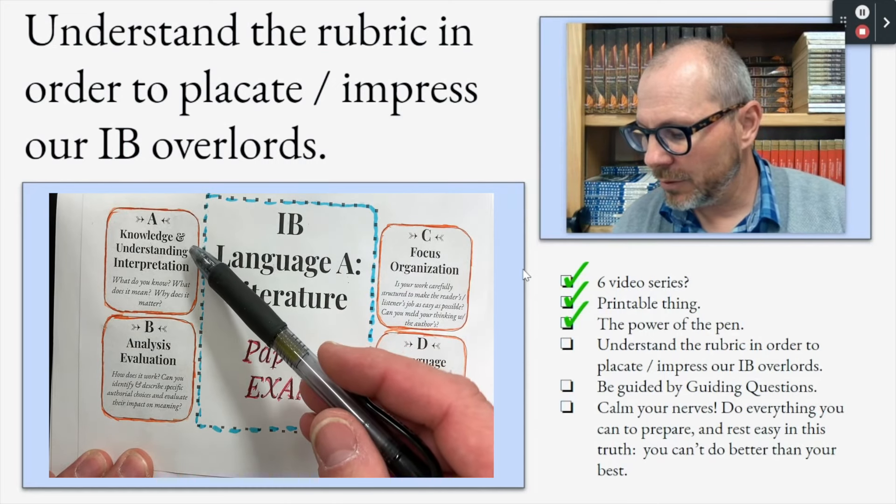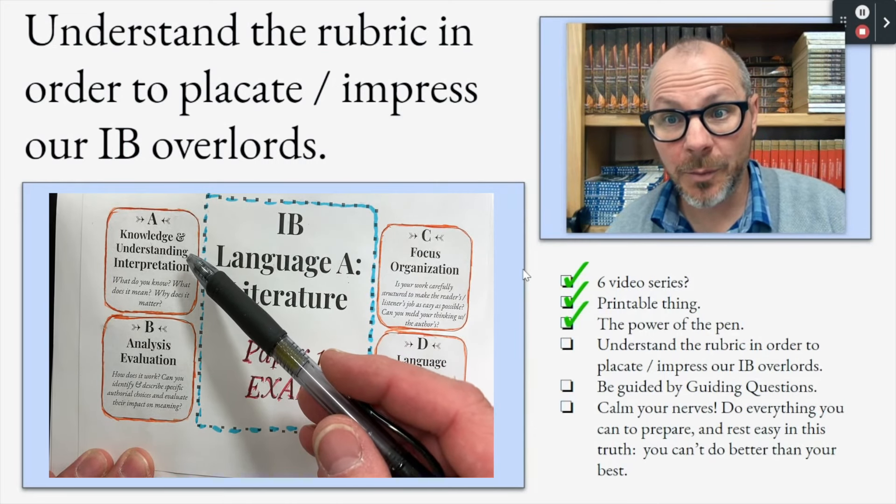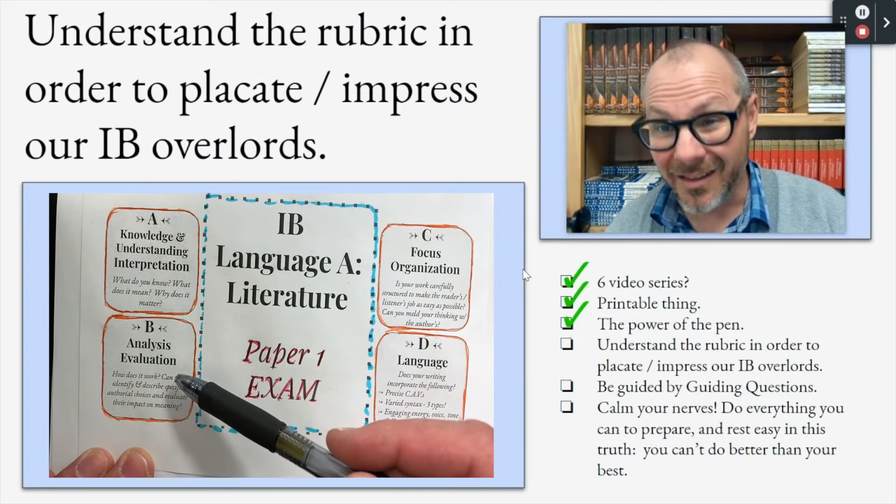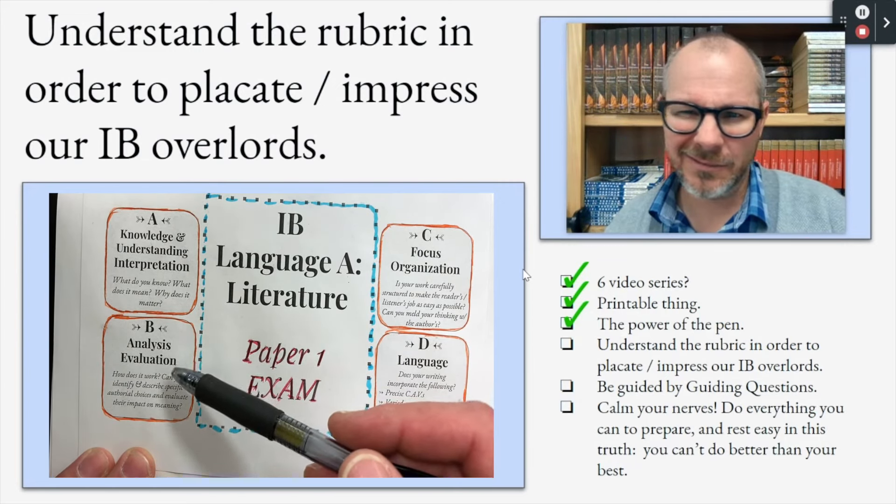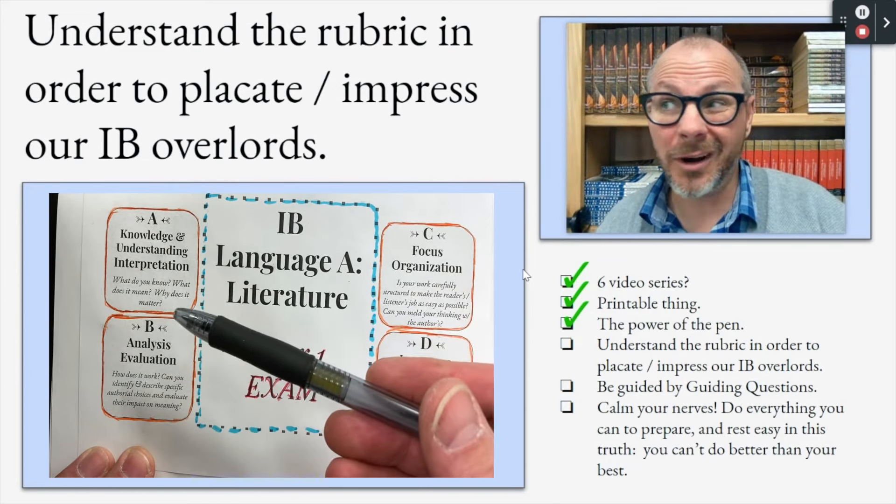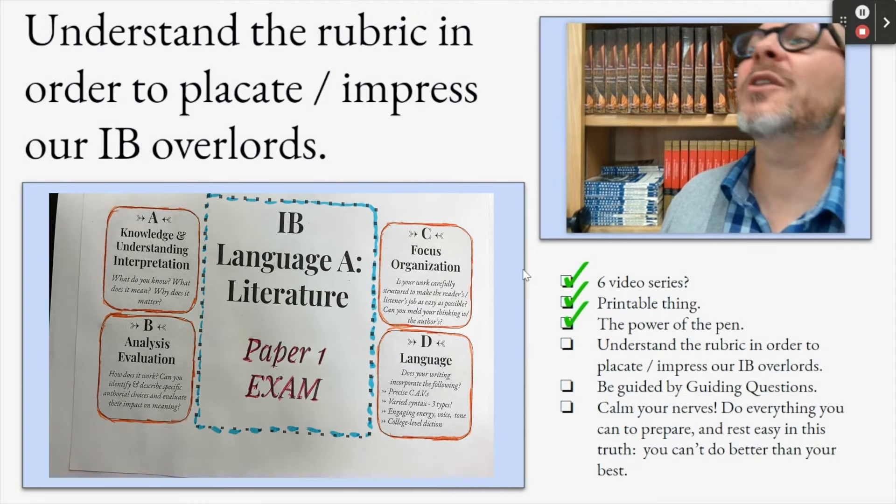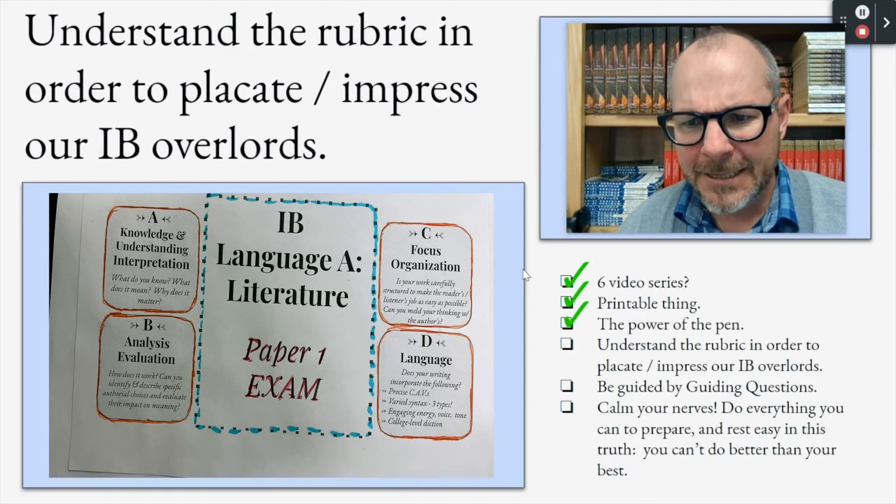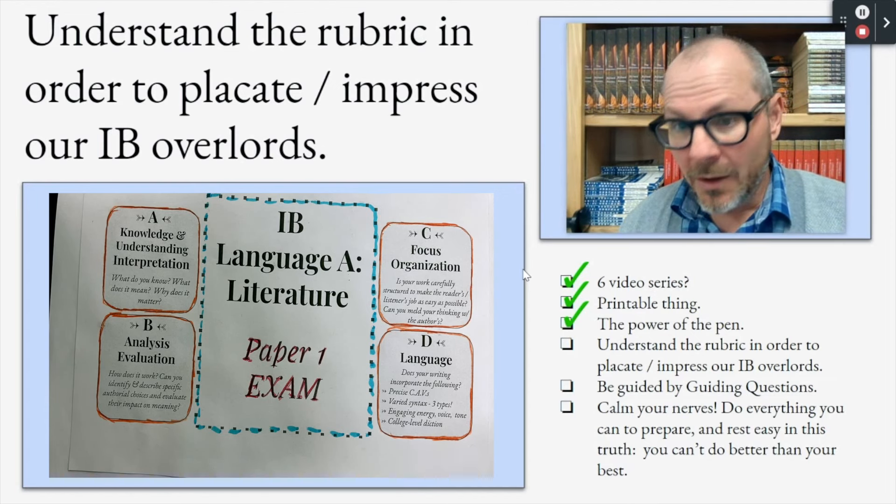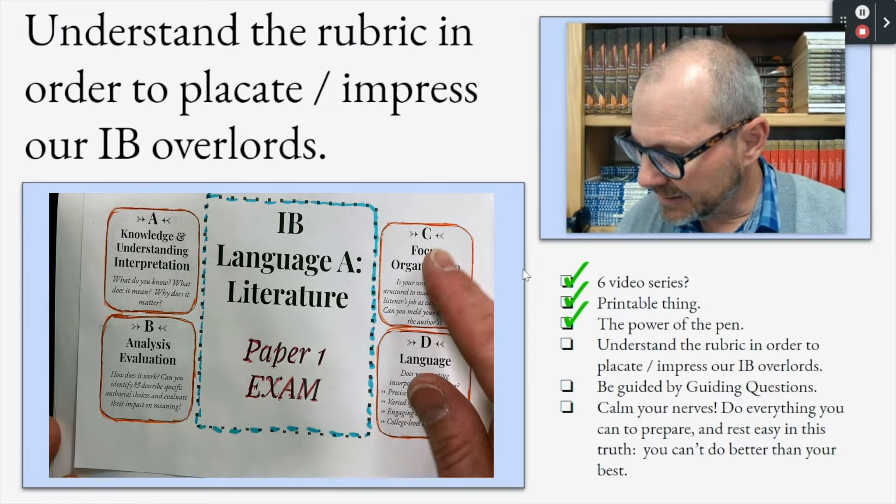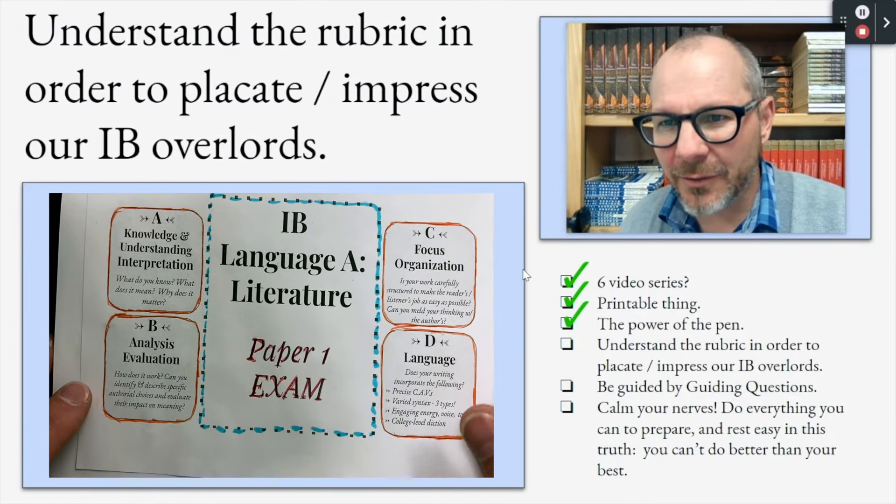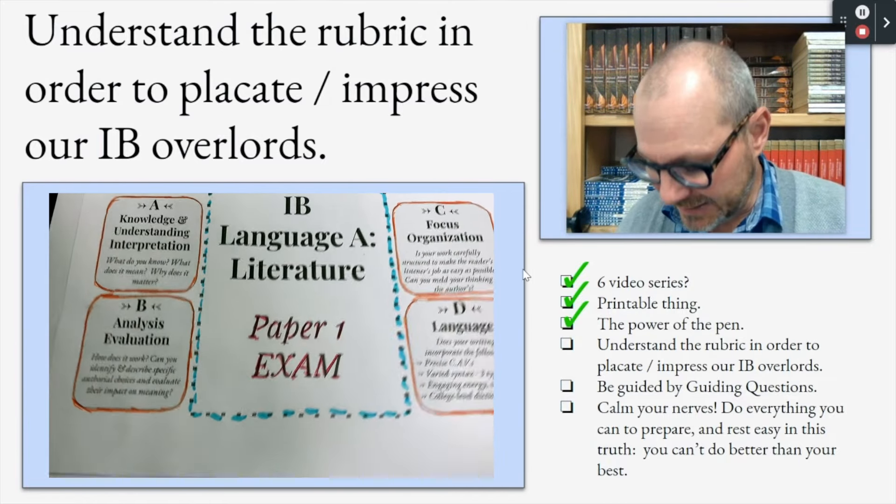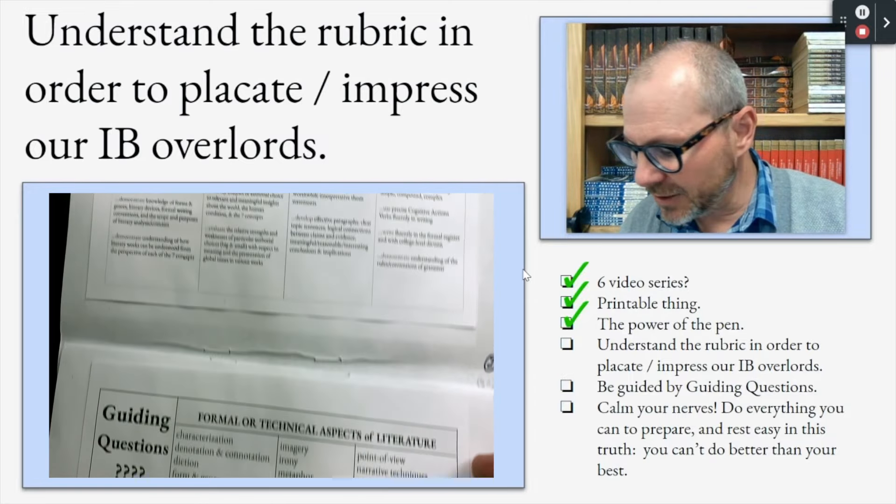So understand the rubric. Well, the rubric starts with the four different criteria upon which your work will be judged. They're right on the front cover. Your ability to demonstrate knowledge, understanding, and interpretation of texts you've never seen before. It's analysis and evaluation of those texts. What's the difference between those two things? That's the kind of thing we're going to get into. So these are the four dimensions, A, B, C, and D. But we need to break those down a little bit into specific skills. And so that's what this page is all about.